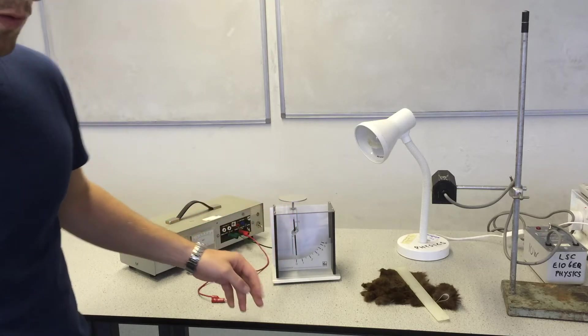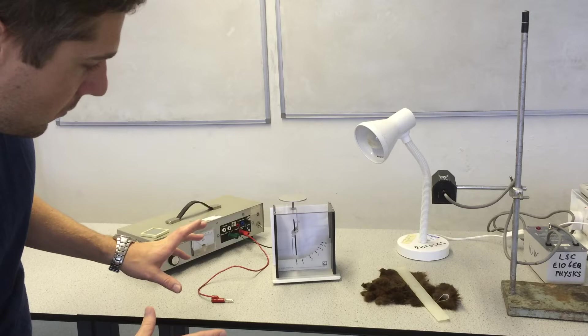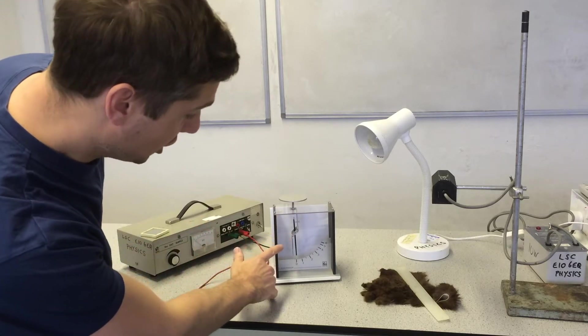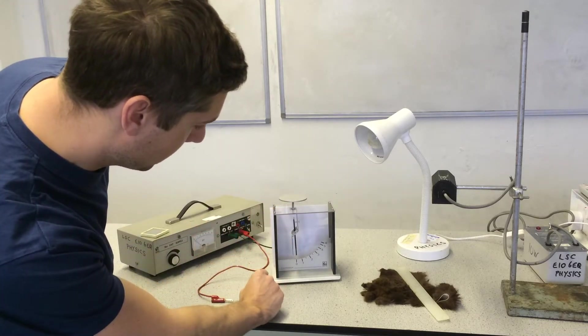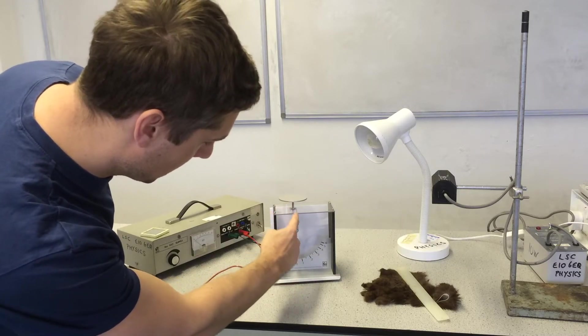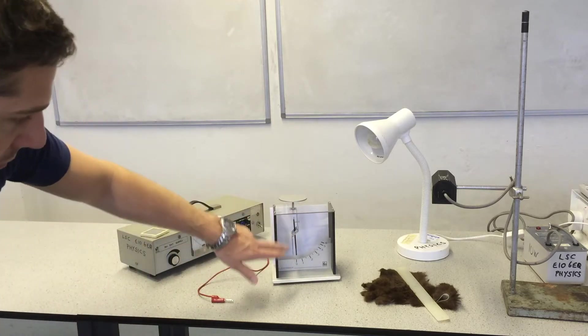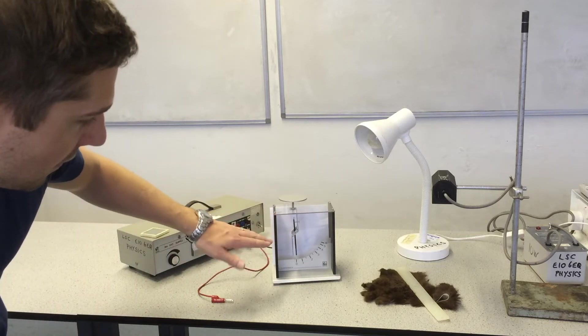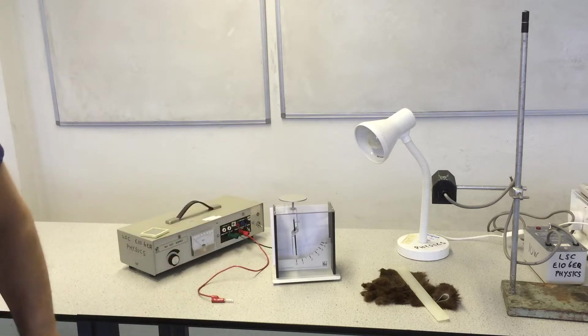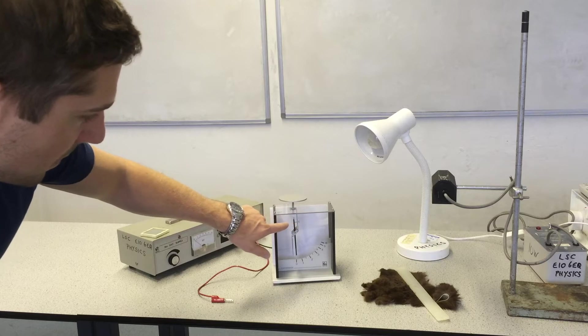At the opposite end, what that will do then is measure charge. So if this plate becomes charged, the charge will be transmitted along the stem because it's all one piece, and where the rod is pivoted, that will also pick up the charge.